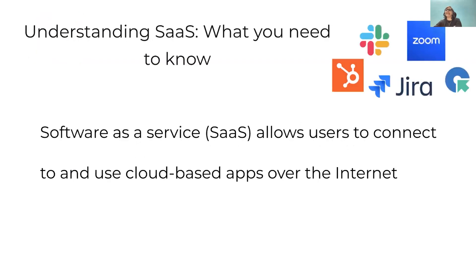Next, we are going to see about what is SaaS. SaaS, or Software as a Service, allows users to connect to and use cloud-based apps over the internet. A cloud service provider that offers SaaS provides a whole software solution that you pay for as you use it. You rent the use of an app for your organization and your users connect to it over the internet, usually with a web browser. All of the underlying infrastructure, middleware, app software, and app data are located in the service provider's data center. The service provider manages the hardware and software and ensures the app's availability, security, and your data with the appropriate service agreement. SaaS allows your organization to get quickly up and running with an app at a minimal upfront cost.